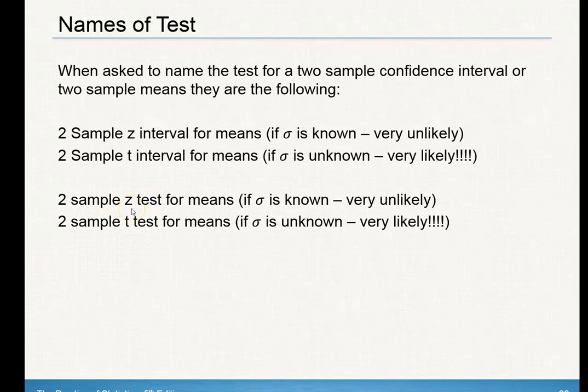Be careful because that's different from a two-sample z test and a two-sample t test. A two-sample z test is when sigma is known; t test is sigma unknown. Make sure you're including your degrees of freedom.